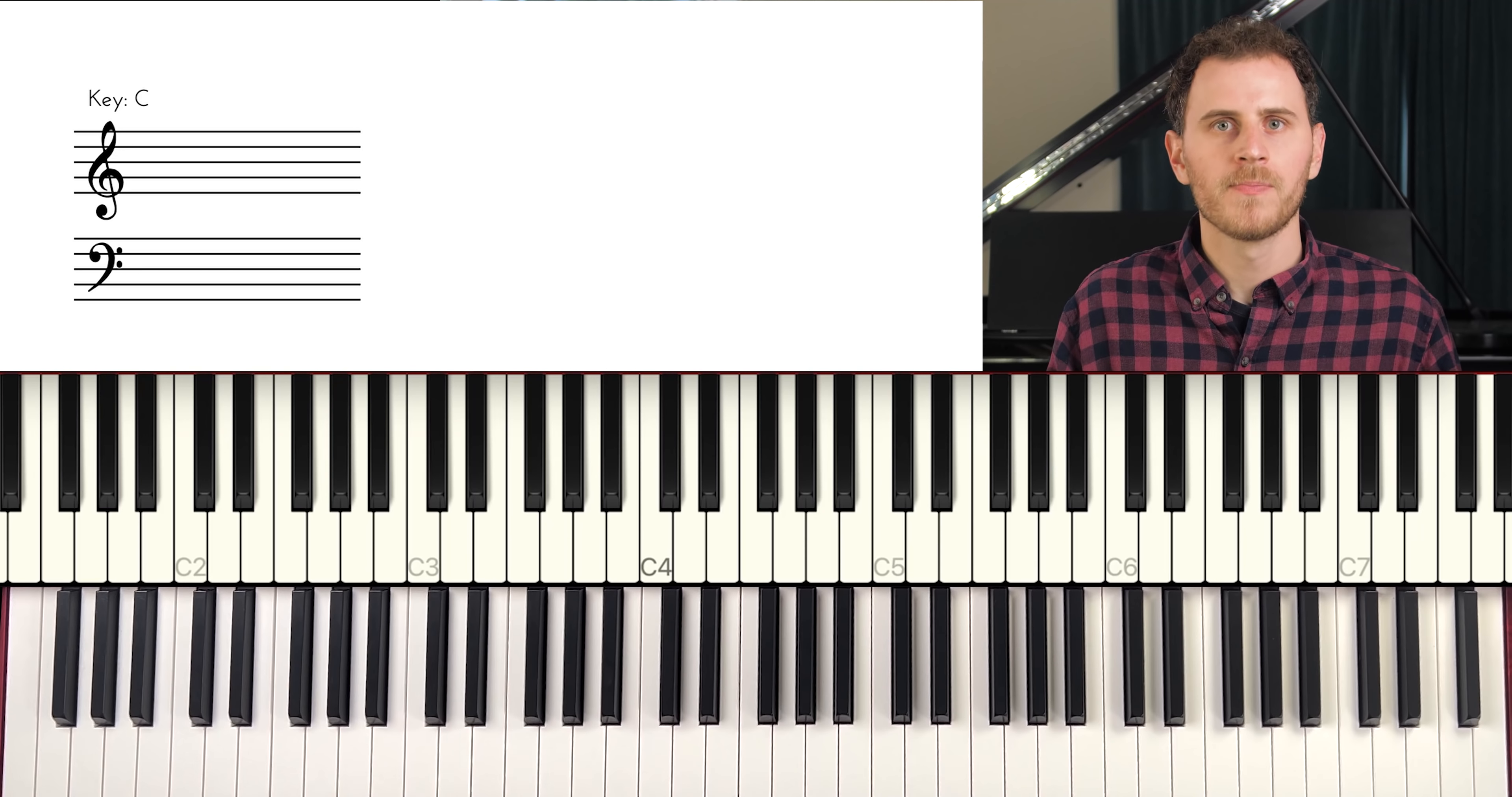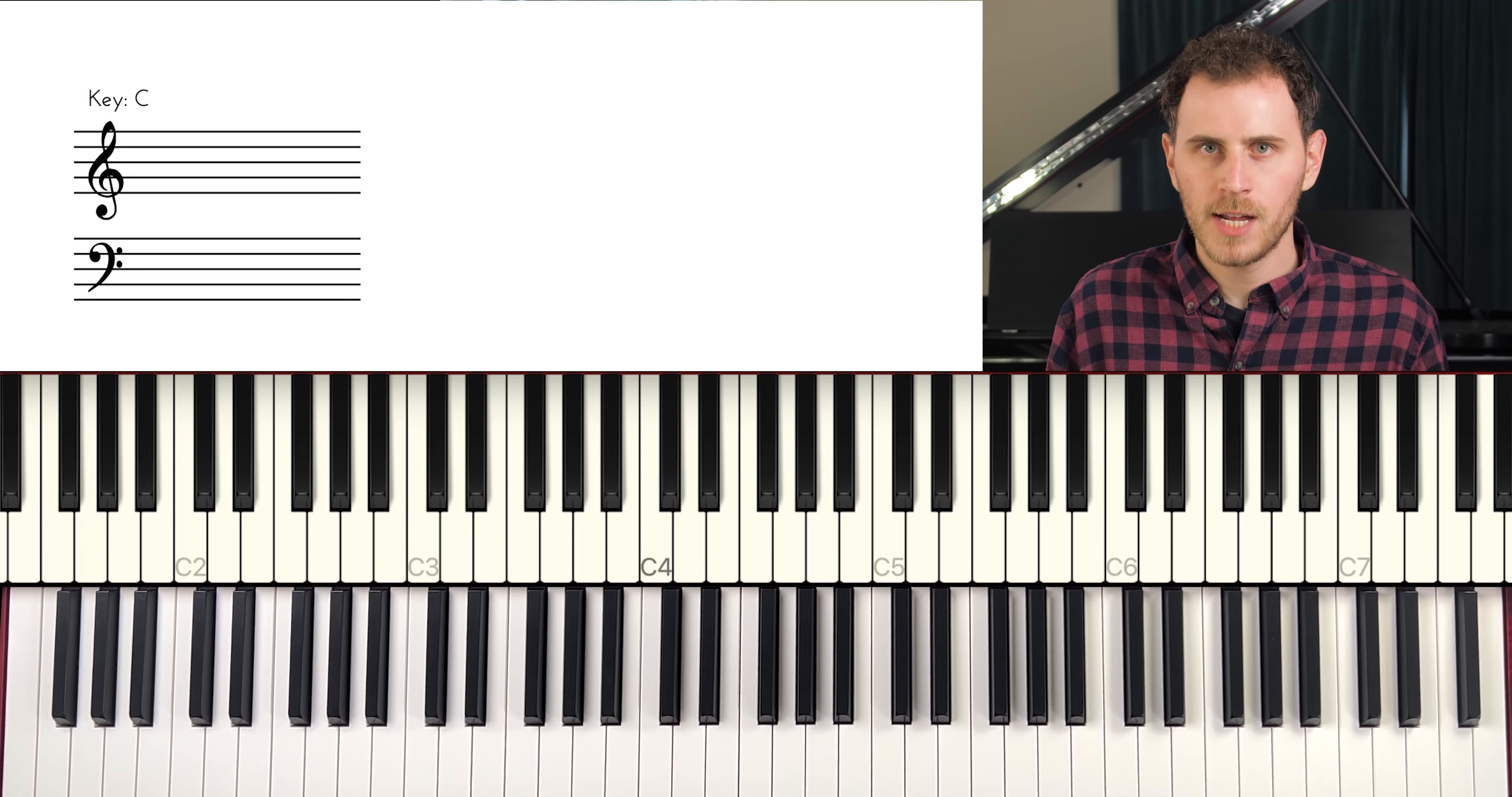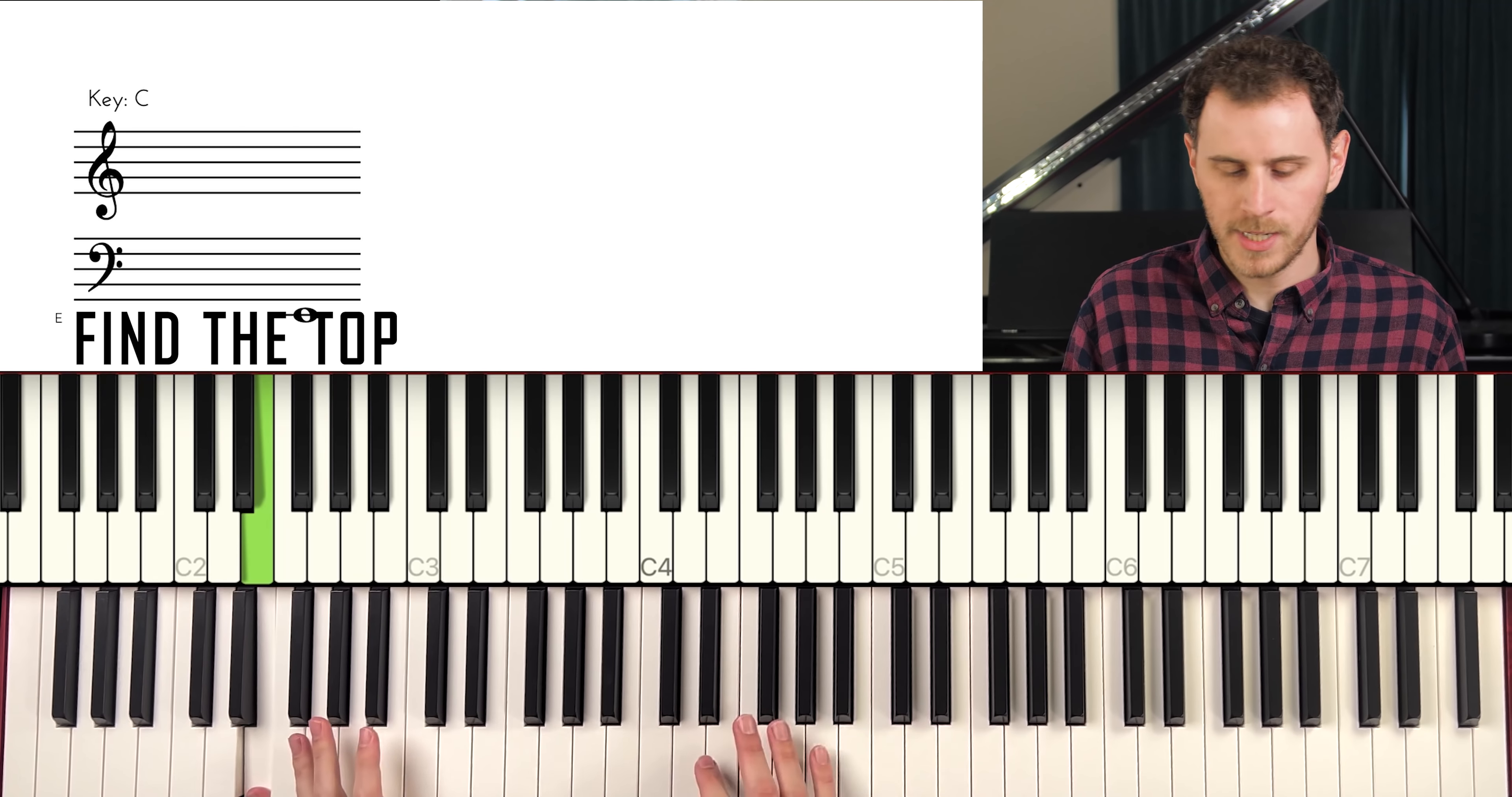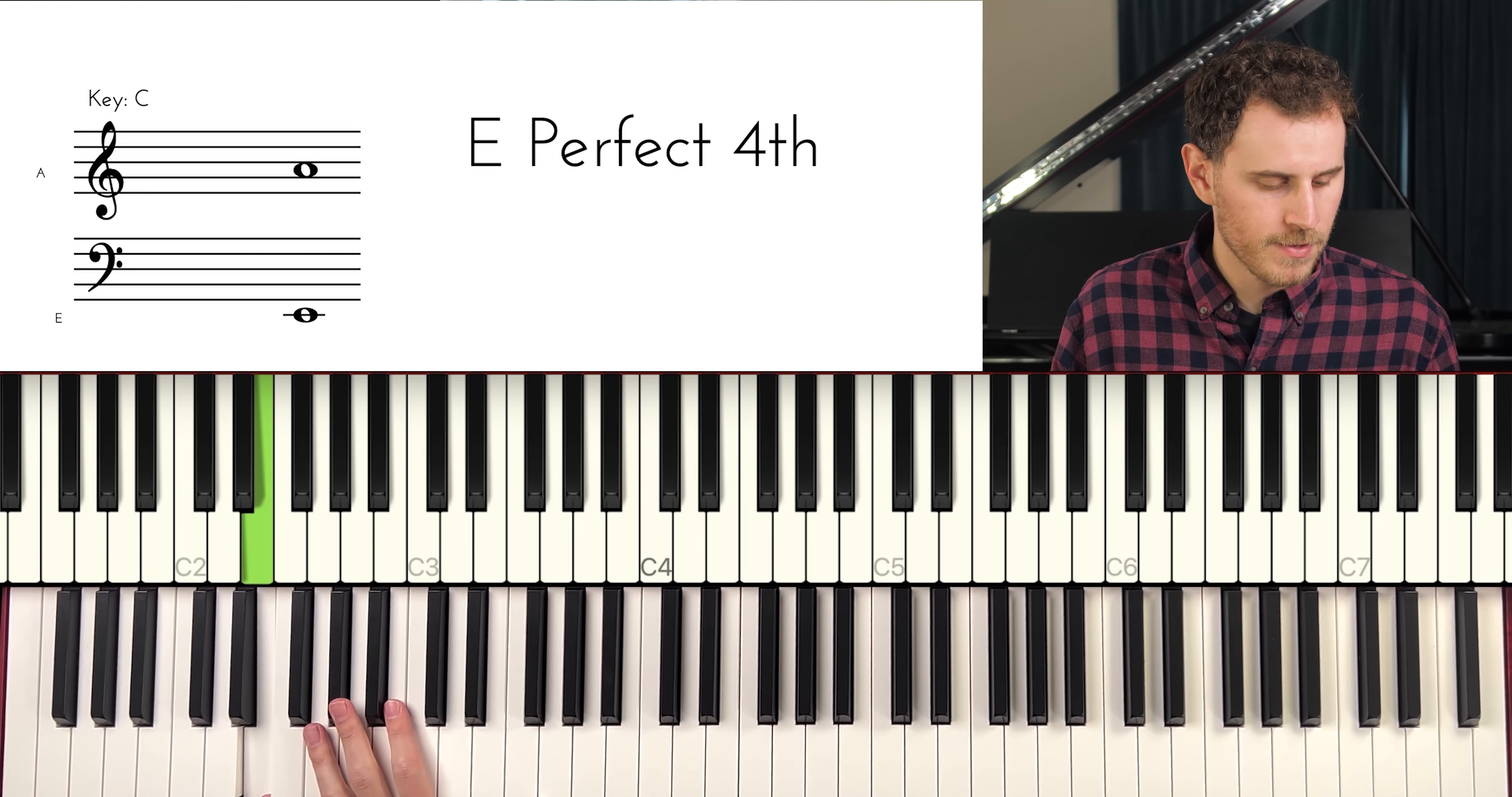So if we're transcribing a voicing, we could actually start by trying to just figure out what is the shape in the left hand. So that's a really good method. So number one, when we're listening to a voicing, the first step I would recommend is, of course, what is the root of the chord? And then I would recommend figuring out what the top note is too, because I think that can be helpful. But from there, I want you to think, what are the different shapes that we can find in the left hand?